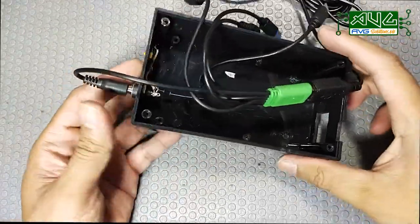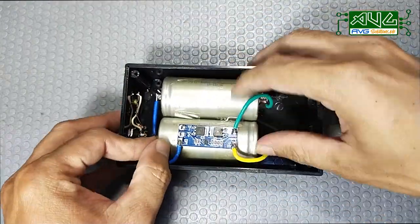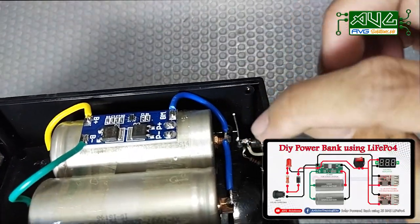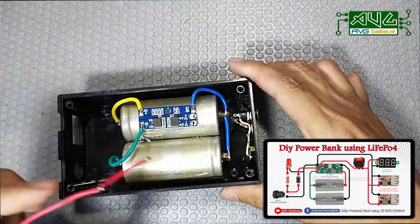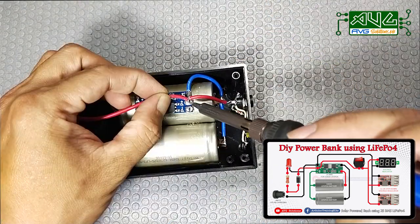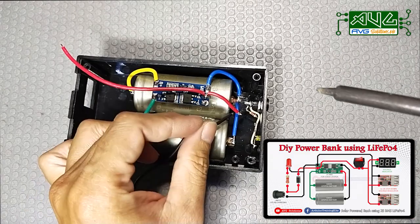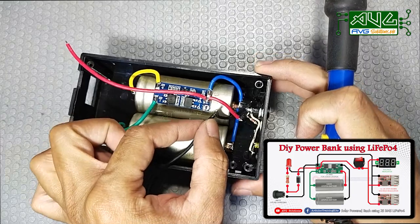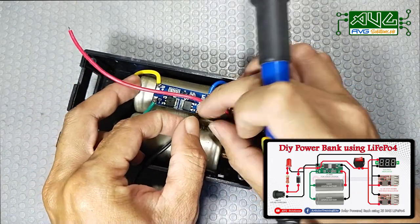Okay, diretso tayo. Gumamit na din ako dito ng diode. Ito yung supply galing sa solar panel. Dito ako kukuha ng positive line. Itong next naman, ito yung negative line. Galing sa solar panel. Connect natin sa BMS.